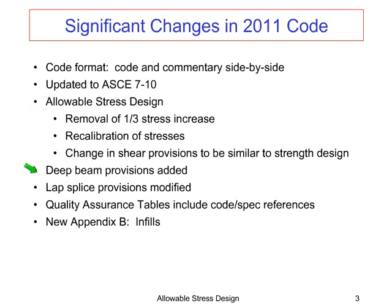We did add some deep beam provisions — beams where the length is less than twice the height — and there are some special provisions added into the code for that. We have also modified the lap splice provisions. There is now the option, if you have transverse steel at the lap, to allow a reduction in your lap splice, based on testing that showed transverse steel provided confinement. Quality assurance tables now include code and spec references, and there's also a new appendix on infills.